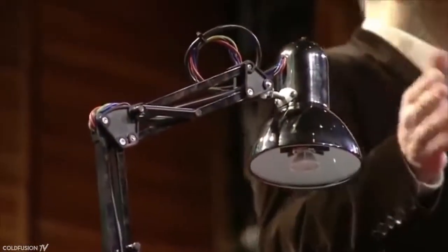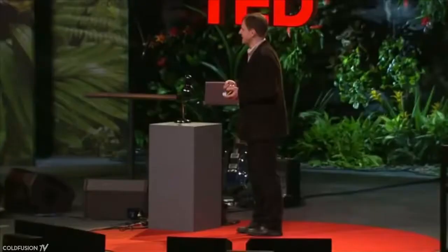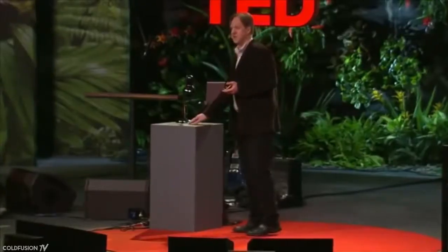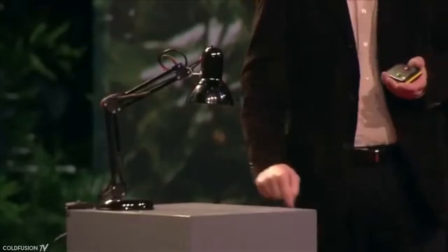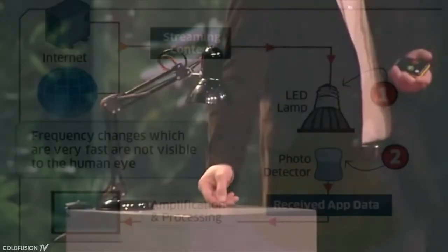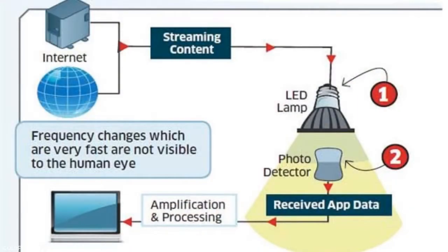In another part of the talk, Haas does a pretty cool demonstration. He fits a desk lamp with a normal LED bulb worth about $3. A software code makes the bulb flicker at extremely high speeds. This flickering, or pulsing, is then converted into a signal by a receiver.